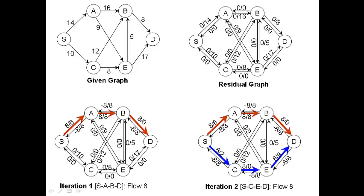Similarly, B to D has 0/8 — 0 is the flow and 8 is the capacity, and no flow and capacity on the back edge. You draw this in a graph. Now find a path from the source to the sink, S to D. Let's say you have a path S, A, B, D. The path has available capacities of 14, 16, and 8 on each edge respectively.